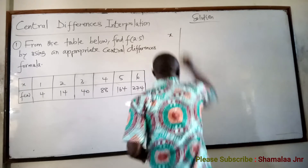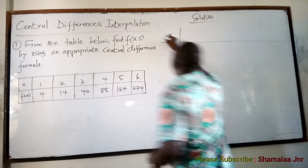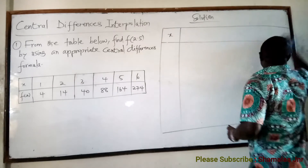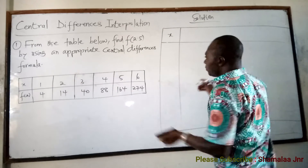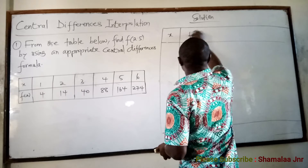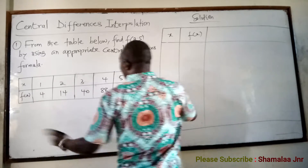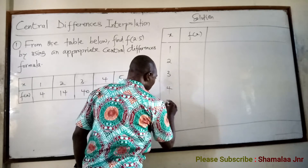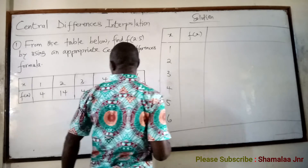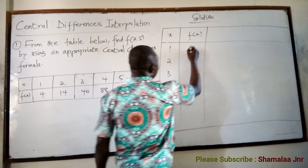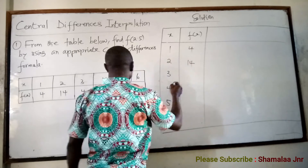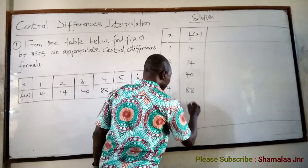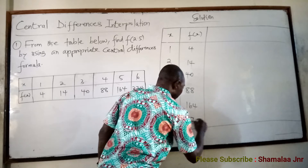Let us construct a table. Those of you who have watched the videos I mentioned, constructing this table should not be a problem at all. We have the x values: 1, 2, 3, 4, 5, and 6. And then the corresponding functional values are 4, 14, 40, 88, 164, and 274.